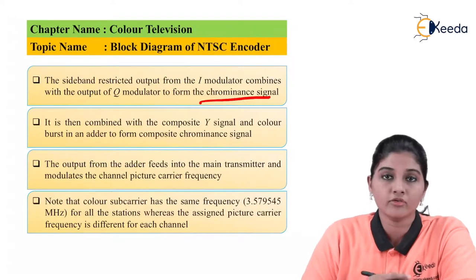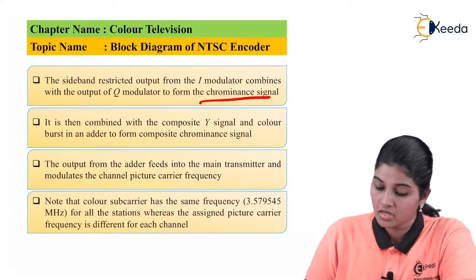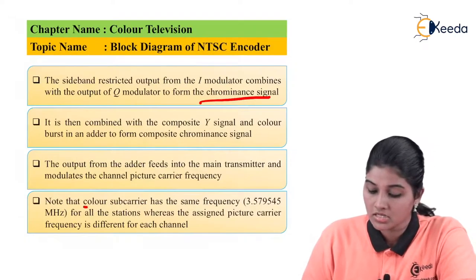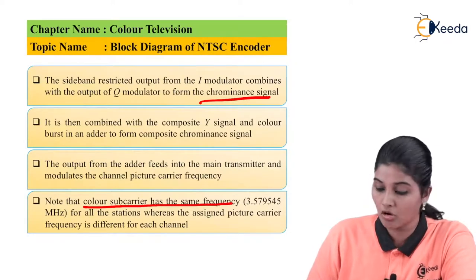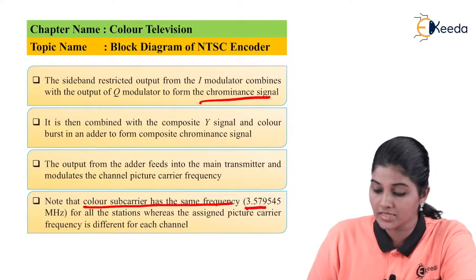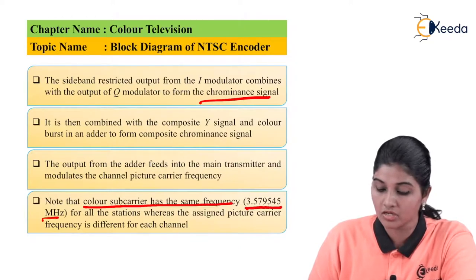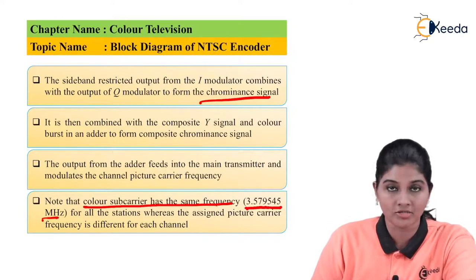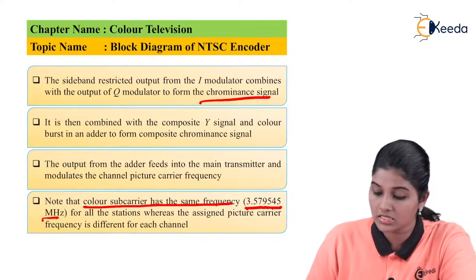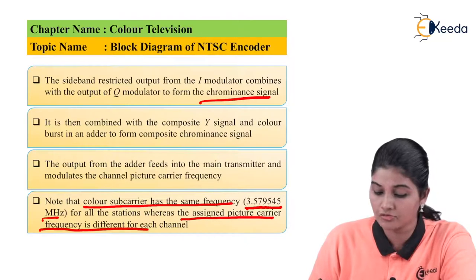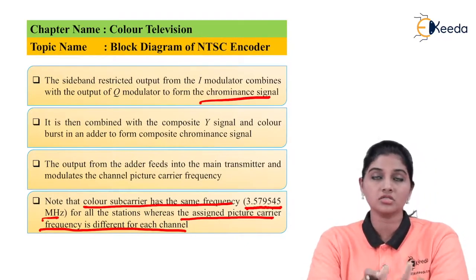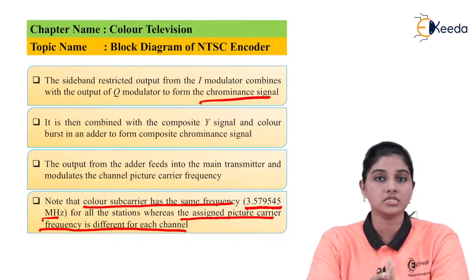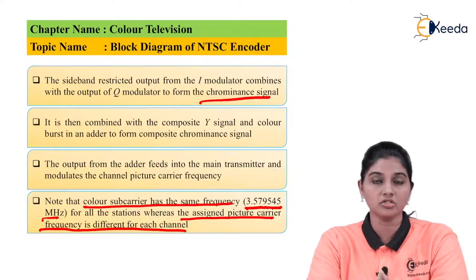The color subcarrier has the same frequency of 3.579545 MHz for all stations, whereas the assigned picture carrier frequency is different for each channel. This is how the NTSC encoder works.